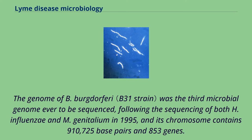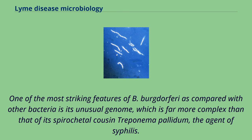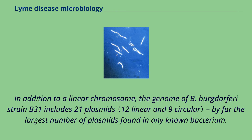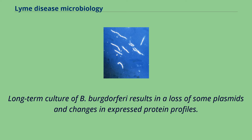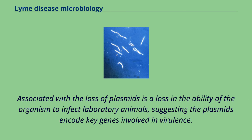The genome of B. burgdorferi was the third microbial genome ever to be sequenced, following the sequencing of both H. influenzae and M. genitalium in 1995, and its chromosome contains 910,725 base pairs and 853 genes. One of the most striking features of B. burgdorferi as compared with other bacteria is its unusual genome, which is far more complex than that of its spirochetal cousin Treponema pallidum, the agent of syphilis. In addition to a linear chromosome, the genome of B. burgdorferi strain B31 includes 21 plasmids, by far the largest number of plasmids found in any known bacterium. Genetic exchange, including plasmid transfers, contributes to the pathogenicity of the organism. Long-term culture of B. burgdorferi results in a loss of some plasmids and changes in expressed protein profiles, associated with a loss in the ability of the organism to infect laboratory animals, suggesting the plasmids encode key genes involved in virulence.